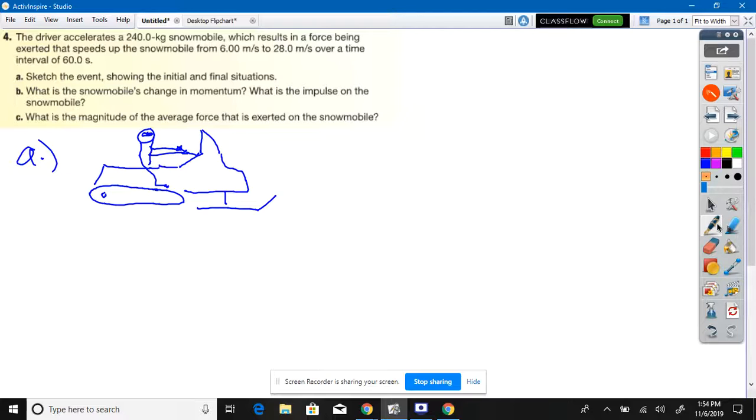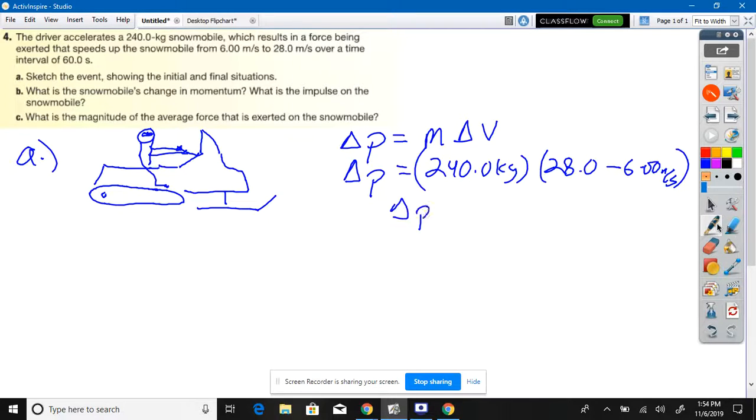What is the snowmobile's change in momentum? Change in momentum, look on the board, mass times change in velocity. You cannot change the mass, therefore you change the velocity. So your change in momentum is your mass, 240 kilograms, times your change in velocity. So you subtract 28.0 minus 6.00 meters per second.